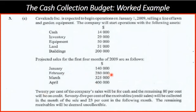Notice first that we are given the information in dollars, so we don't have to multiply units by the price. Twenty percent of the company's sales will be for cash, and the remaining eighty percent will be on credit. Sometimes they don't give you this part explicitly.